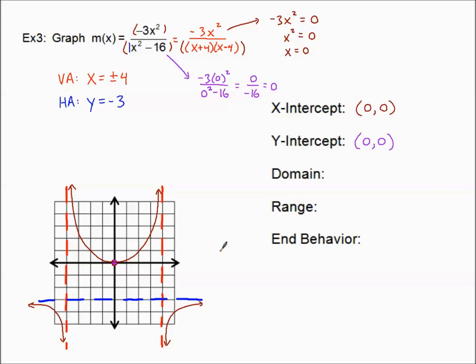Domain: x cannot be equal to plus or minus four. For the range, I need to look at the graph. I'll use interval notation because there are a bunch of numbers not used — all the values between negative three and zero.